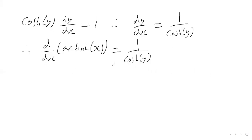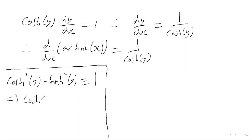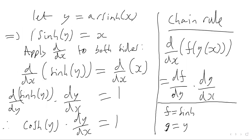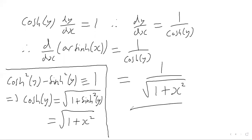We need to express cosh(y) in terms of x using a hyperbolic identity. The key identity is cosh²(y) - sinh²(y) = 1. Rearranging, we get cosh(y) = √(1 + sinh²(y)). Now, since x = sinh(y), we have sinh²(y) = x², so cosh(y) = √(1 + x²). Substituting back, dy/dx = 1 / √(1 + x²).